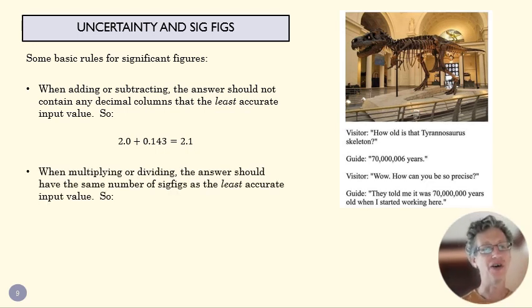All right. When we're multiplying, we don't want to use decimal columns because that doesn't make sense. So we want to use significant figures. And again, we take the least accurate input value and use the values there. But this time we're counting sig figs. So this has two significant figures. So my answer is not going to have more than two significant figures.